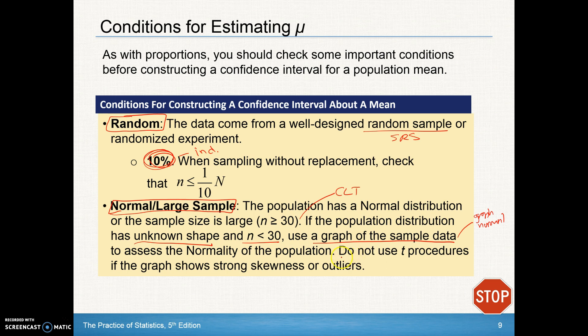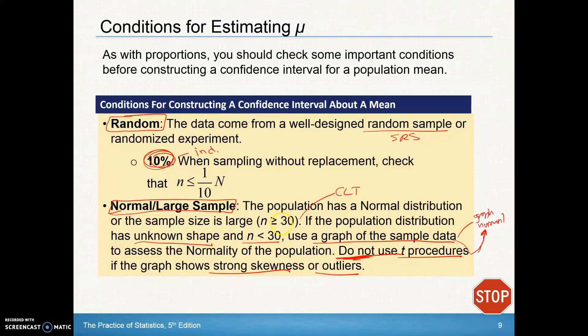But do not use T procedures if the graph of the sample data is not normal, if it shows strong skewness or outliers. We'll address what to do when that happens in future lessons. But for right now, we should be able to assess normality—that if it comes from a normal distribution, our sample should be normal. If our sample size is large, which means it's greater than 30, we can use the central limit theorem. If the population distribution has an unknown shape and it's less than 30, graph the data, and then you can go ahead and use the T distribution if our sample data is normal.